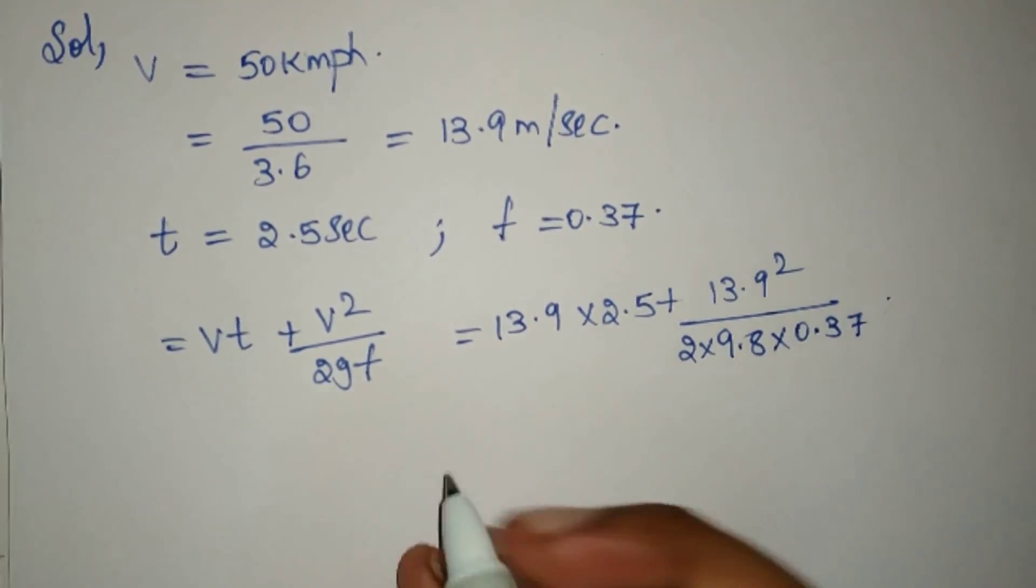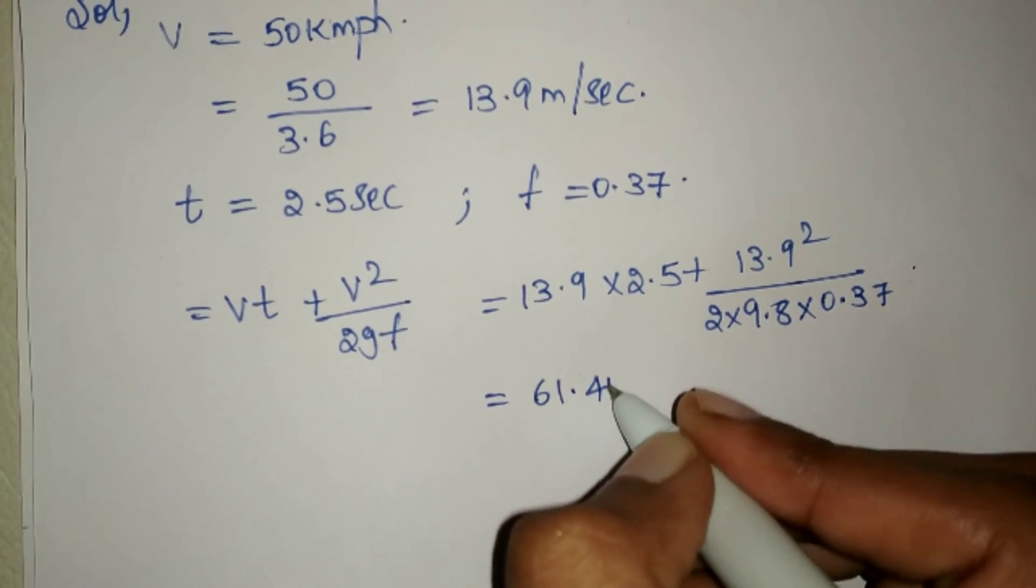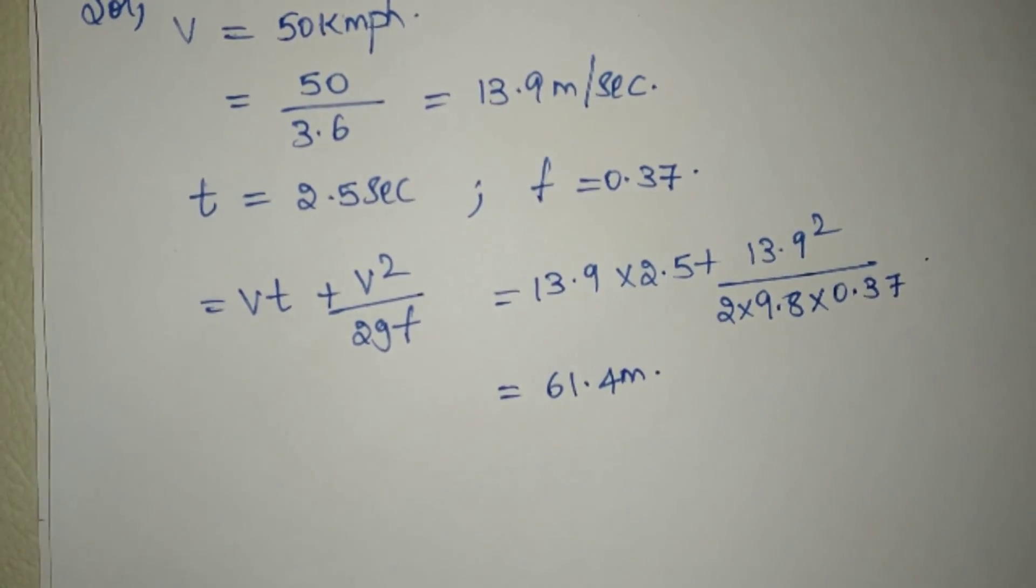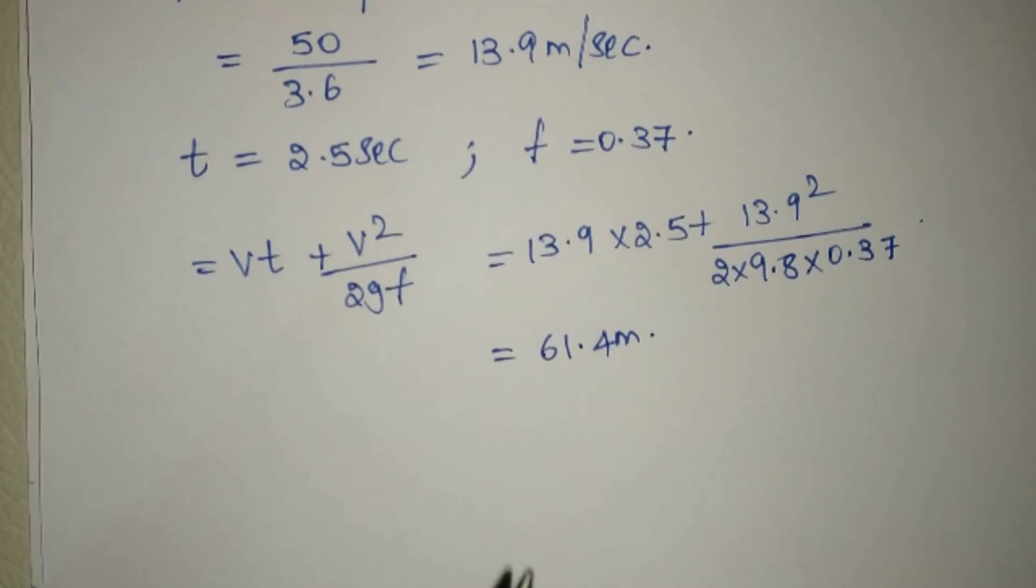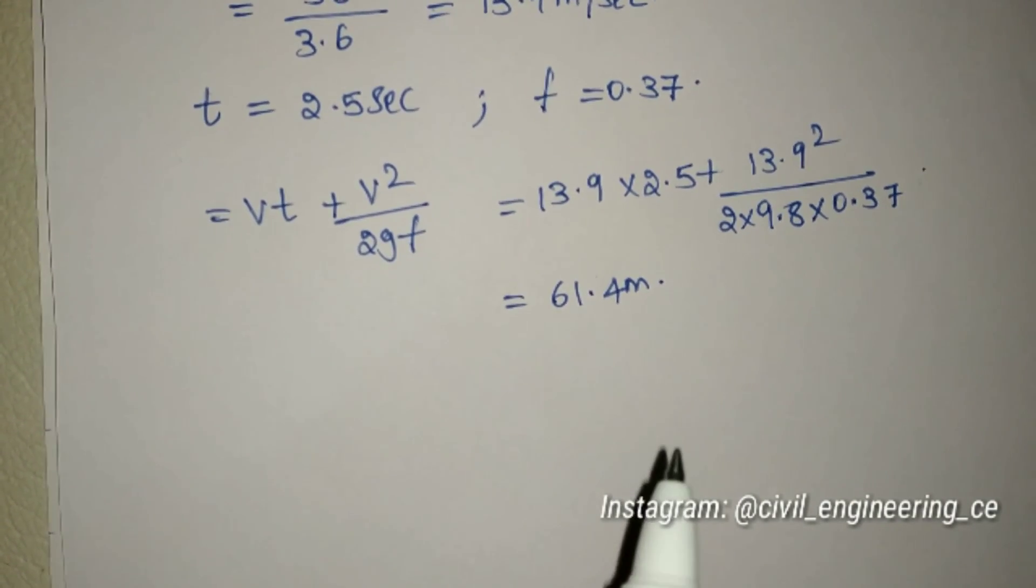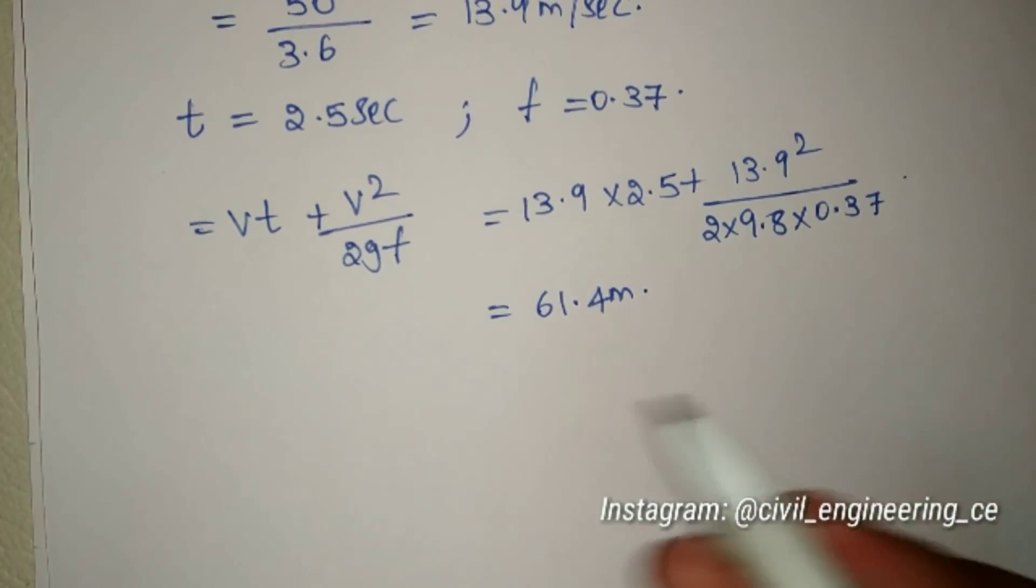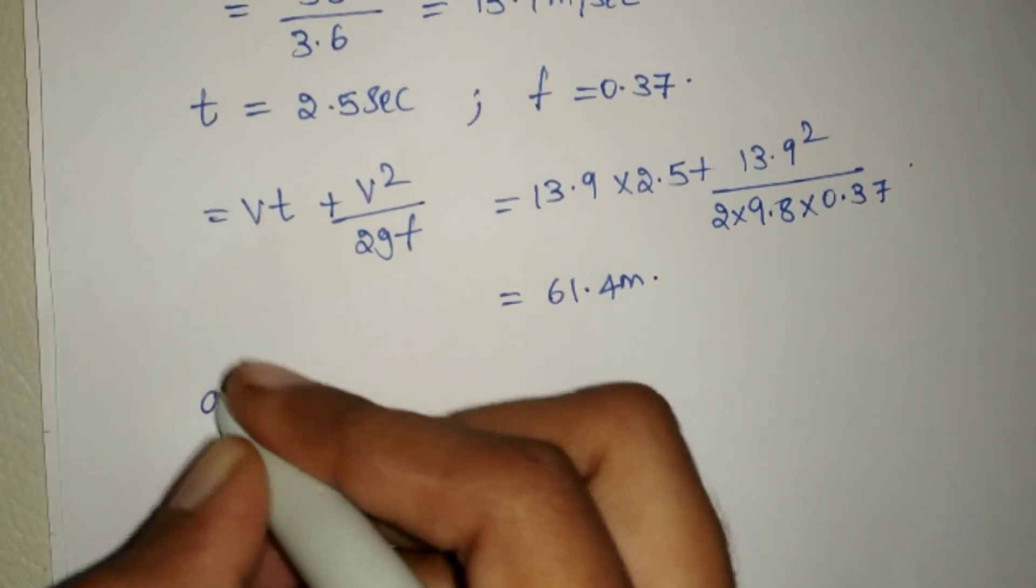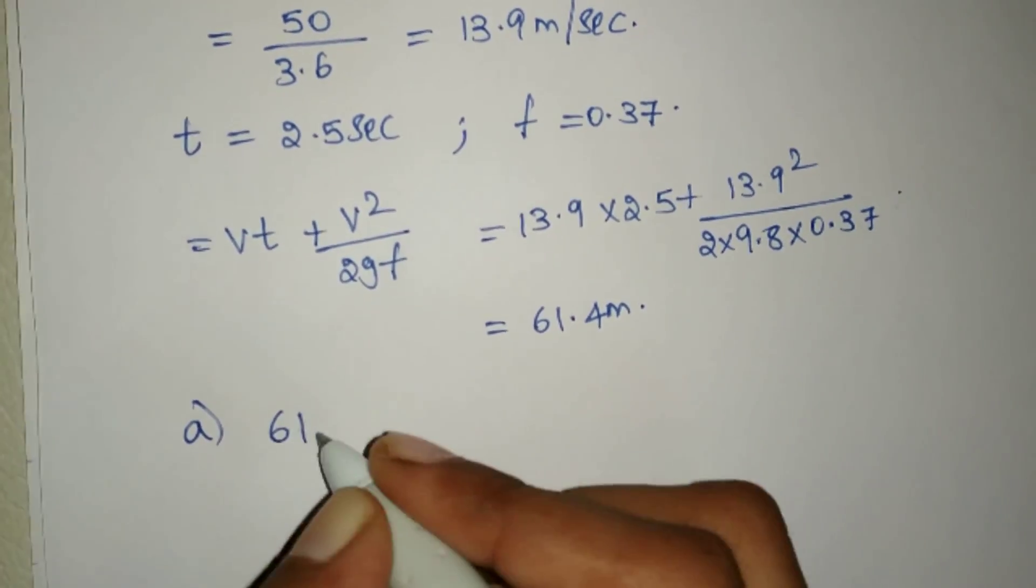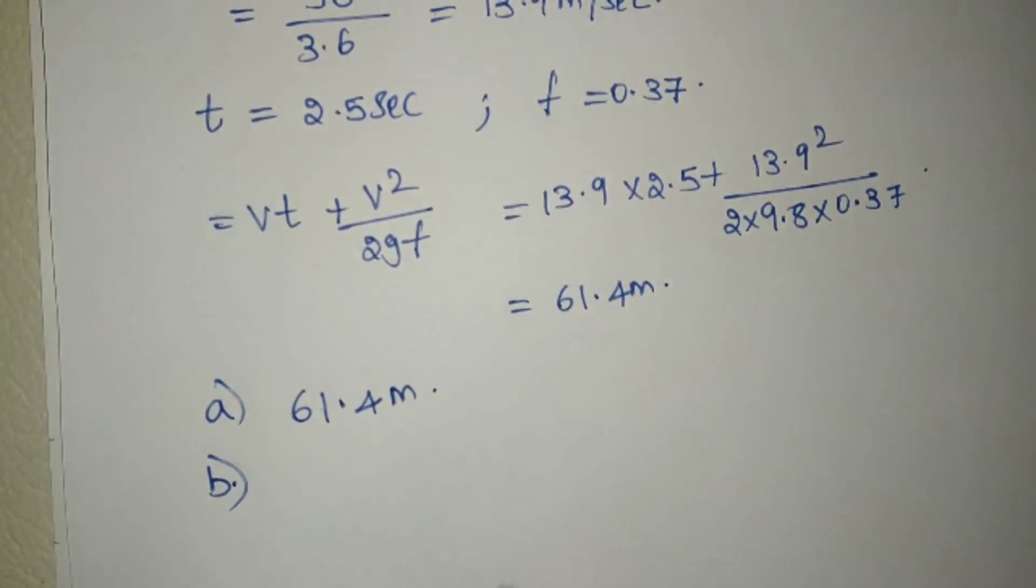We will get the answer 61.4 meters. So the stopping sight distance when there are two lanes will be, for question (a), the answer will be 61.4 meters.